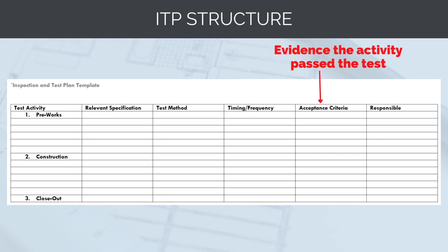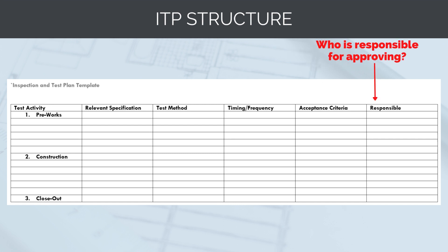Under acceptance criteria, this is where we nominate what type of records, documentation, or evidence we'll provide to verify that the activity passed the nominated test. This may be as simple as a tick of approval, or we may require photos, and so on. Finally, under the responsible section, we'll note down who is responsible for approving that activity and the evidence. In some instances, the project engineer reviewing the works can approve. In others, the client or owner's engineer may need to inspect them.